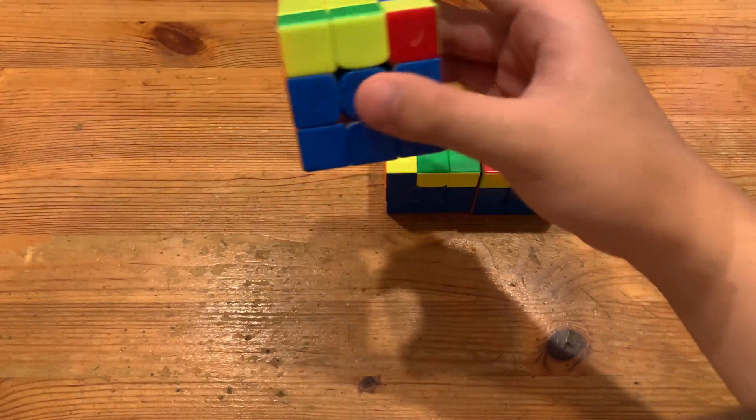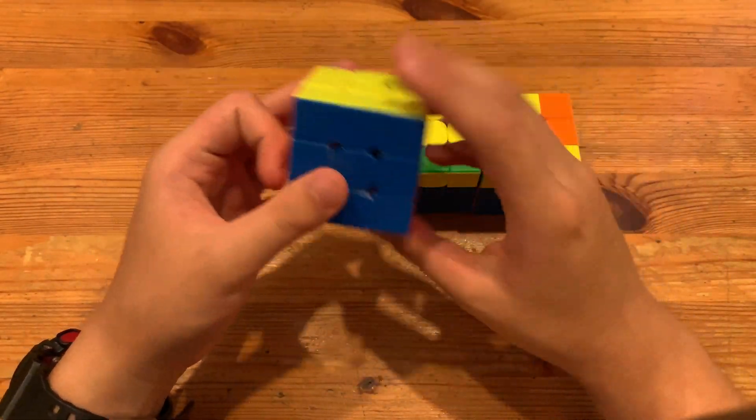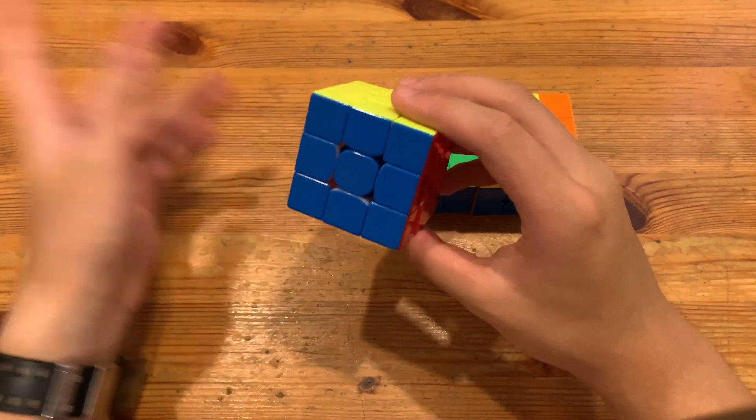And for this corner permutation, a lot of people just like to do this algorithm that goes like this. A lot of people like to use this as their main alg, but the first one is better.